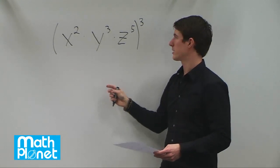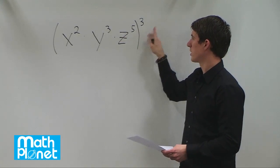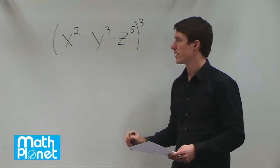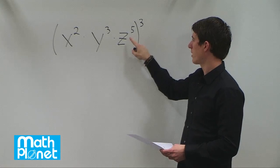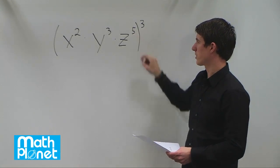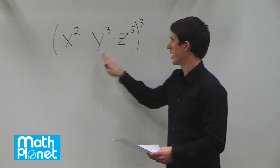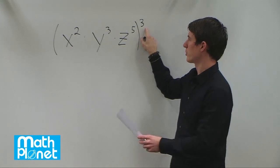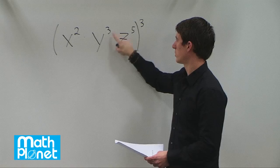So all the like terms are already combined but we have this whole thing cubed so we want to distribute this 3 inside here. When you have a power to a power then what you do is you multiply those numbers. So this whole thing is raised to a power so you multiply the individual indices.